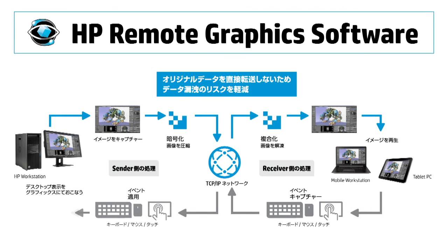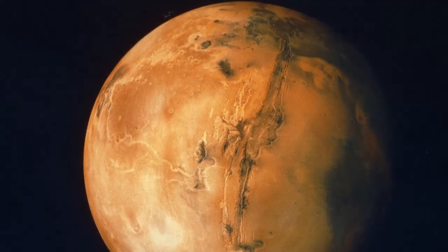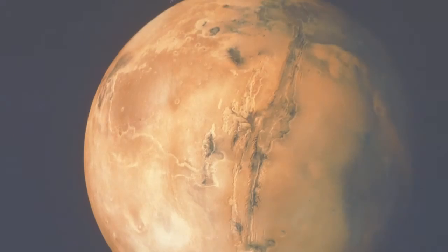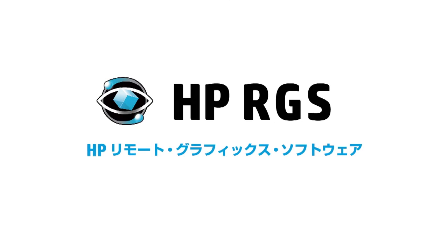さてここまでHPが独自開発をしたワークステーションの遠隔操作ツール、HP RGSの概要をご説明いたしました。このRGSはHPワークステーション Zシリーズユーザーは無償でご利用いただけます。火星探査でも採用されたHPの独自技術から誕生したツールRGS、優れた性能とセキュリティを実現した他にはないツールです。